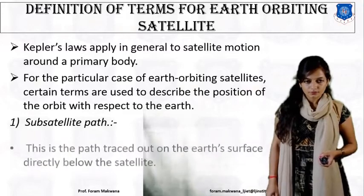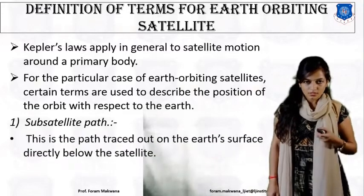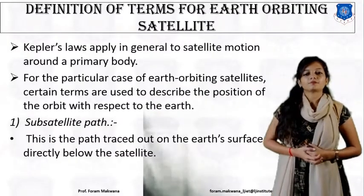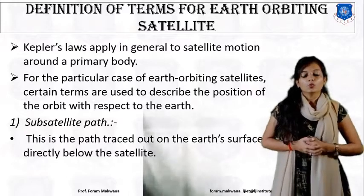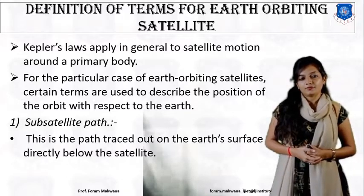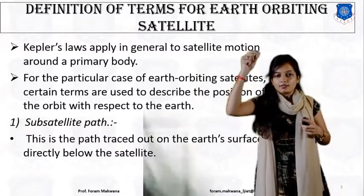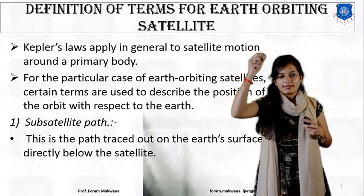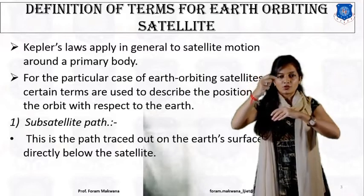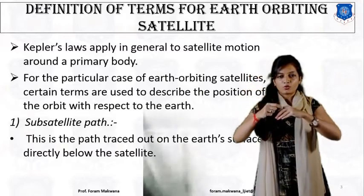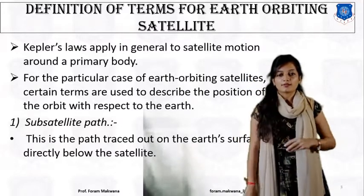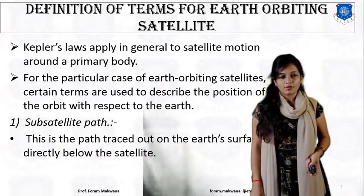The first definition is sub-satellite point. What do you mean by sub-satellite point? This is the satellite and this is the surface of the earth. The vertical projection of the satellite onto the surface of earth — that point is known as the sub-satellite point.